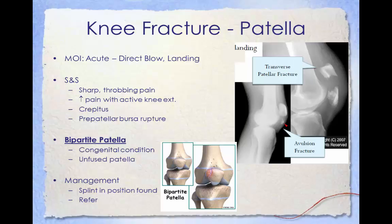Bipartite patella is a congenital condition — present at birth — that occurs when the patella is made out of two bones instead of a single bone. Normally the two bones would fuse together as the child grows, but in a bipartite patella they remain as two separate bones. Individuals with a bipartite patella are often confused as having a fractured patella. X-rays can help distinguish between this condition and a fracture.